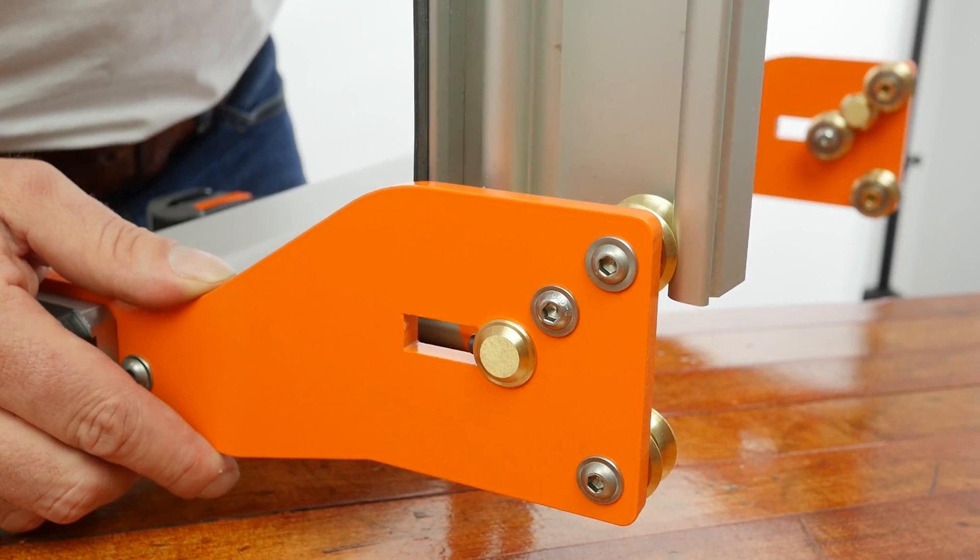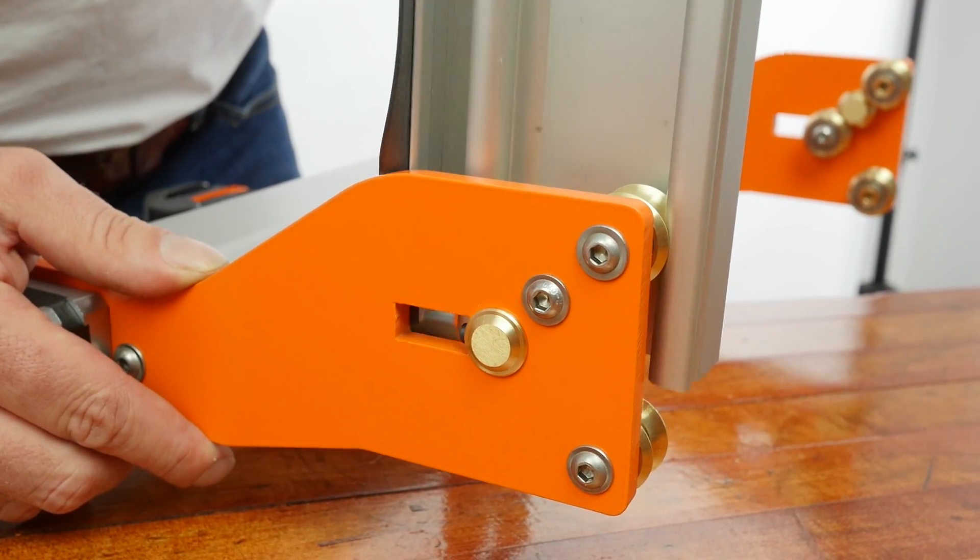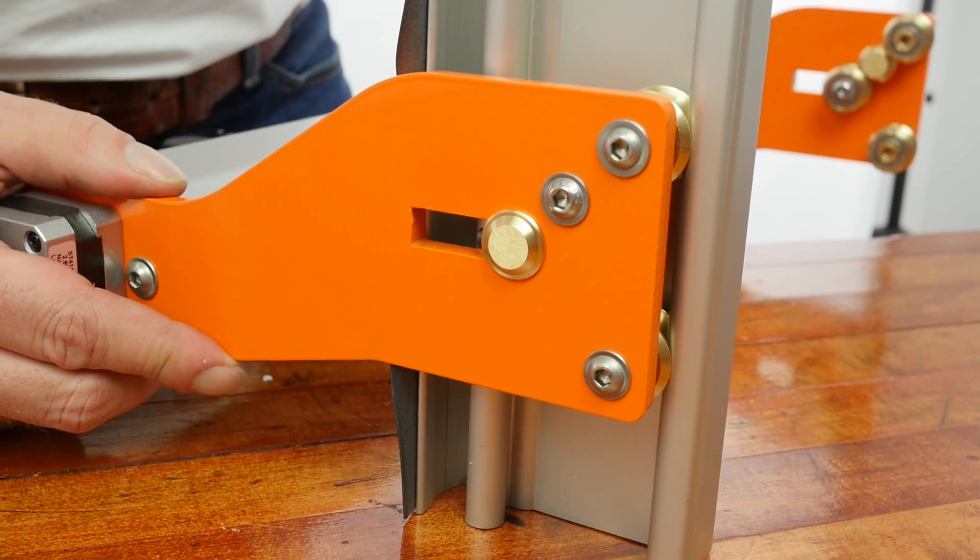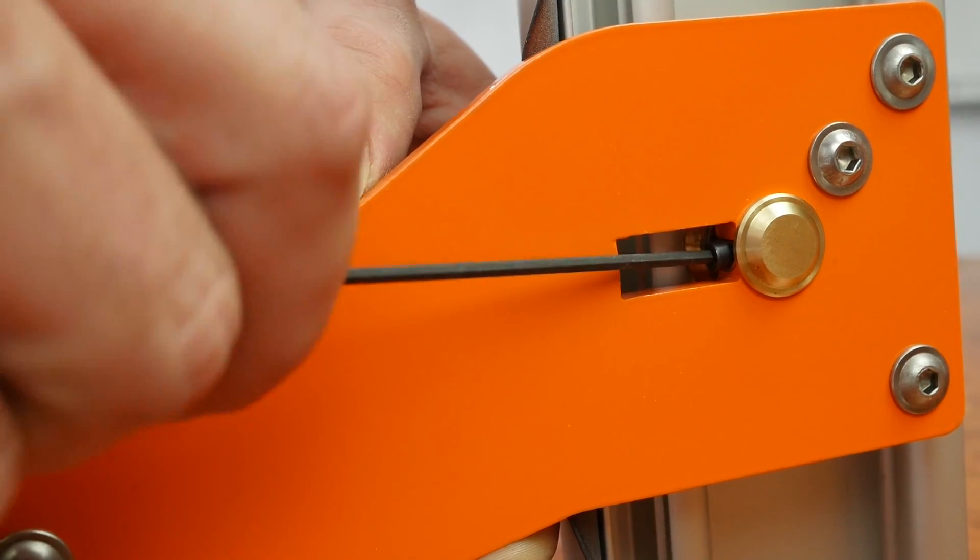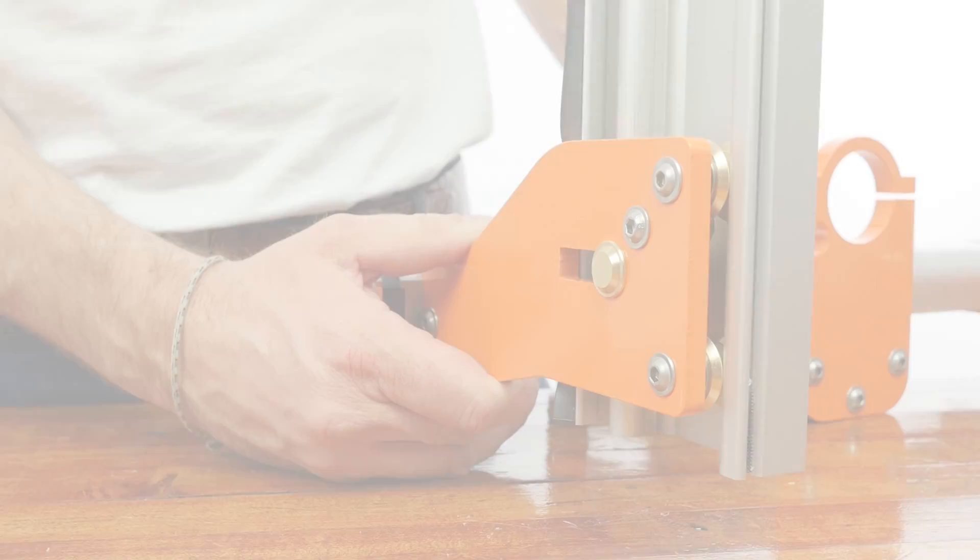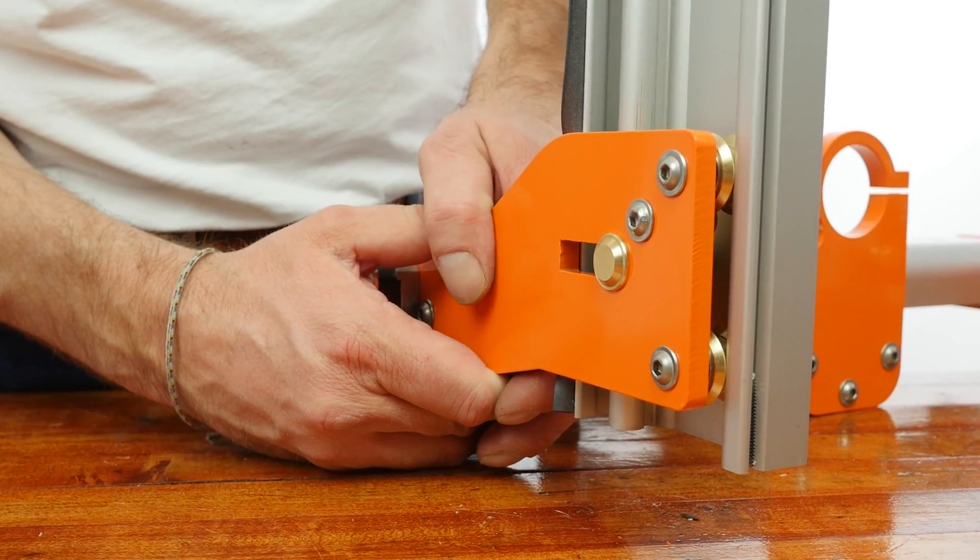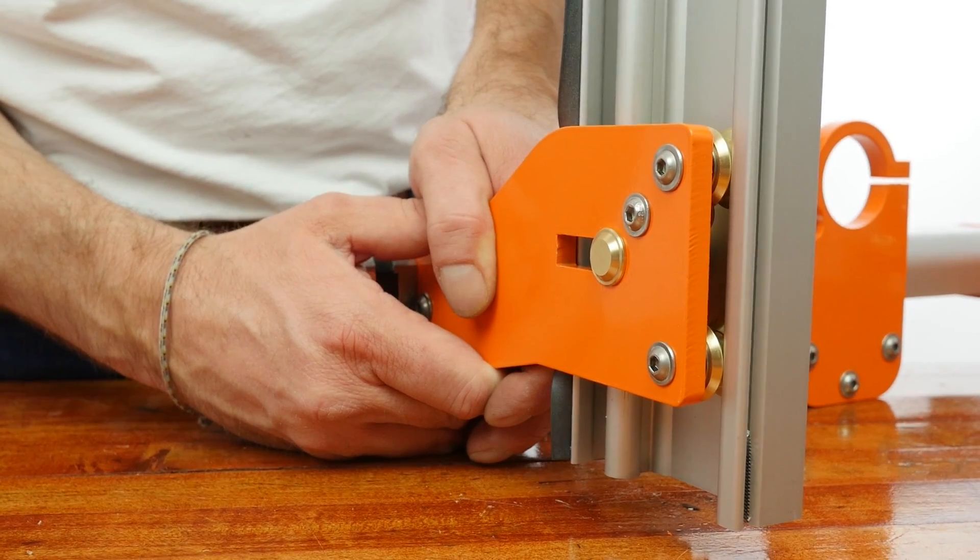The y-axis extrusions are again adjusted the same way. Notice the play that we're about to remove. We'll eliminate this play by adjusting the tension screw. As seen here, a gentle tap and the extrusion will slide.